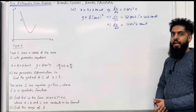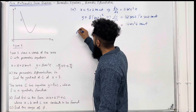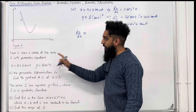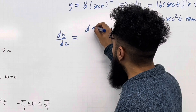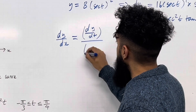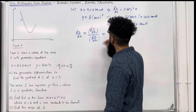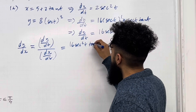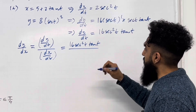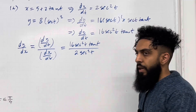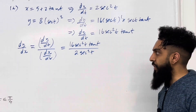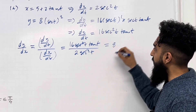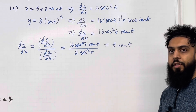Now I can apply parametric differentiation. dy over dx — the gradient function — is given by dy over dt divided by dx over dt. So I've got 16 sec squared t tan t divided by 2 sec squared t. Notice we have a common sec squared t, so we can cancel it out. 16 divided by 2 is 8, so I've got 8 tan t as my gradient function.